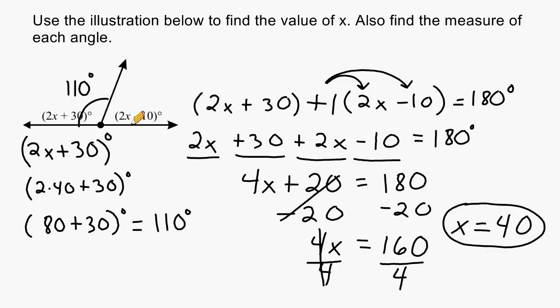And we know that the other angle must be added to 110 to have a total of 180. Therefore, that angle must be 70 degrees. And we can verify this by plugging 40 into the expression 2x minus 10. So we replace the x with 40 and multiply 40 by 2 which is 80 and then subtract 10. And 80 minus 10 does give us 70 degrees.